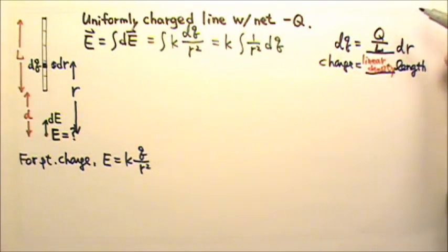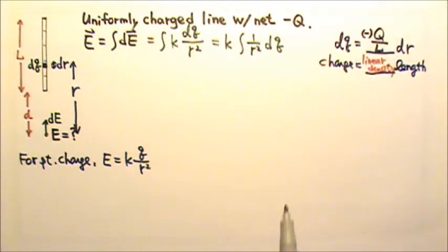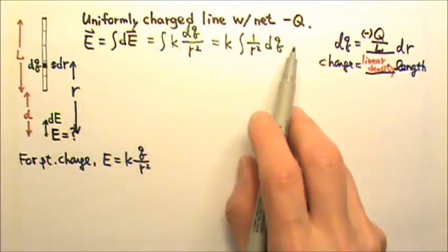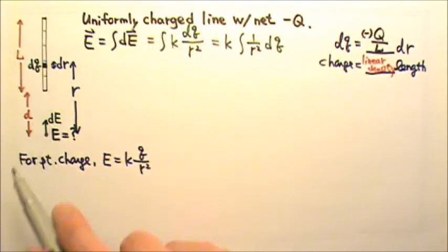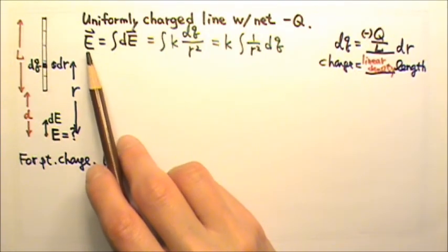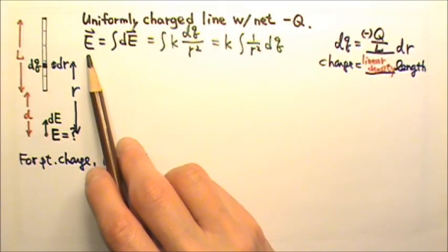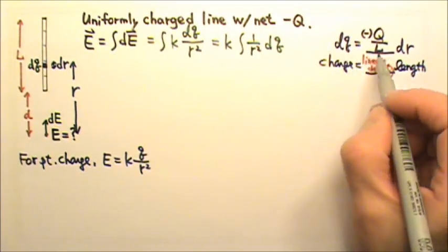This would be the linear charge density. If you want to take care of the sign, you can put the sign in, or we can just keep this as Q over L and use this equation to find the magnitude of the electric field. And then we look at the picture for direction. Because the electric field is a vector, the sign tells us about the direction.